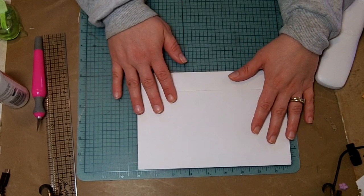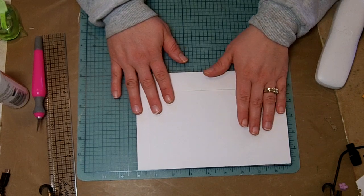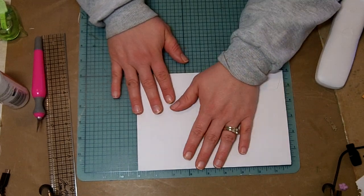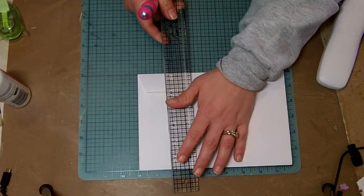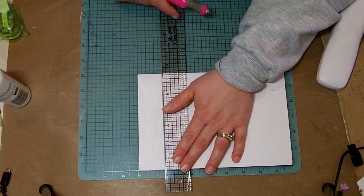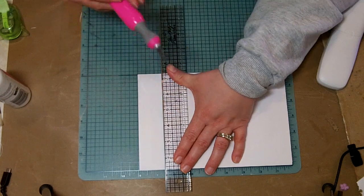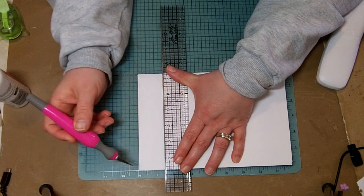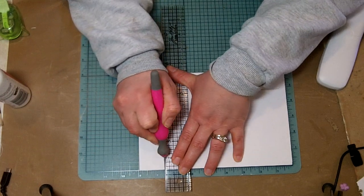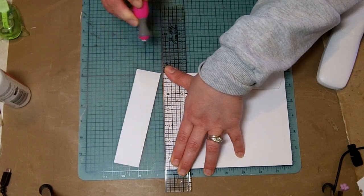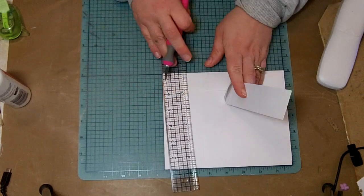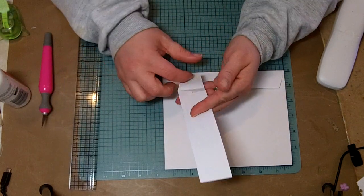What I'm going to do is use my exacto knife. You could use a cutter for this part, but since I'm sitting here at the station, I'm going to take my exacto knife and I'm just going to cut this envelope down to seven and a half inches.